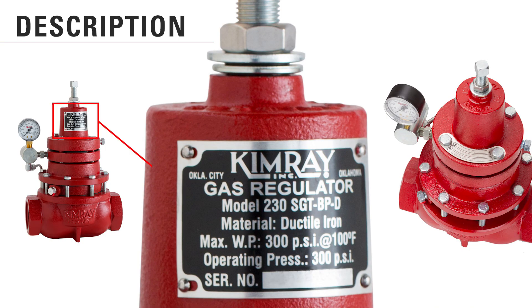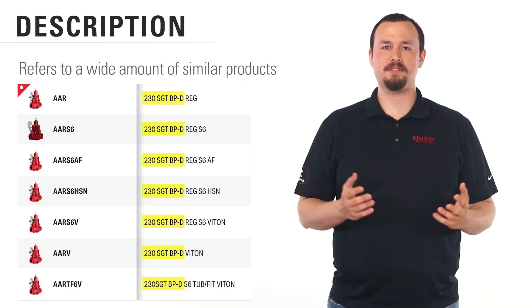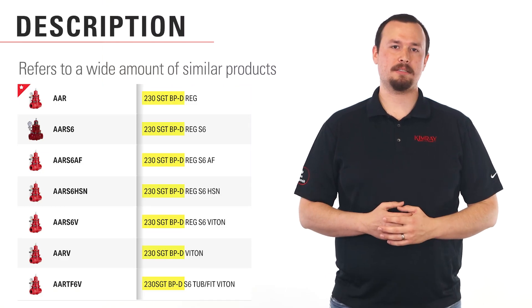The description of the valve will be on the tag or body. You may also hear this called the model or the item number. An example description would be a 230 SGT BP. As opposed to the order code, this description code does not refer to a specific product but can be applied to a wide number of similar products.